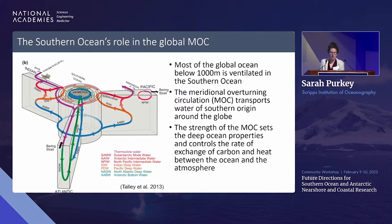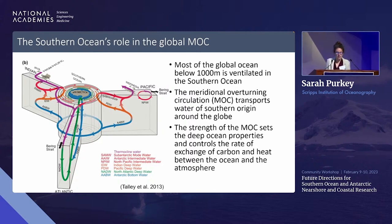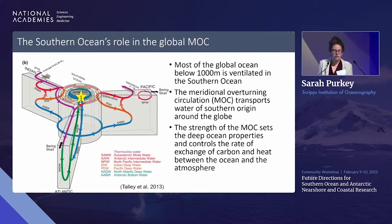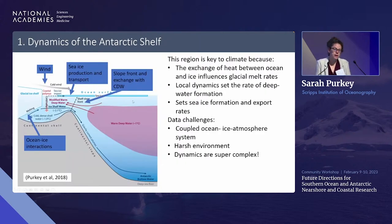It's really important to note that most of the global ocean below a thousand meters is going to be ventilated in the Southern Ocean, and it plays a key role in the overall ability for the atmosphere and ocean to communicate with each other. This figure has Antarctica in the middle and shows some of the key pathways for water to move from the surface into the deep ocean.